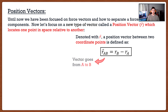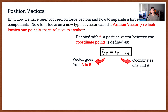If we say position vector AB, this is the position vector that goes from A to B — it starts at A and goes to B. Looking at the subscript, the first letter is where it starts and the second letter is where it ends. To find this position vector, I take the coordinate points of where I end up — coordinate point B — and subtract the coordinate points of where I started — coordinate point A.